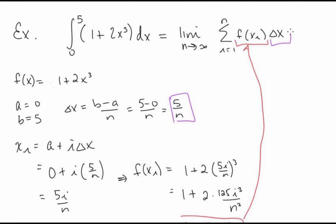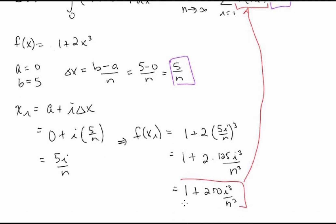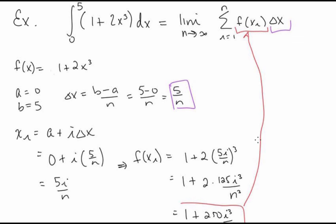That helps us compute x i, since x i equals a plus i delta x. With a equals 0 and delta x equals 5 over n, x i equals 5i over n. Now we need f of x i: plugging 5i over n into the function gives 1 plus 2 times (5i over n) to the third, which is 1 plus 2 times 125i cubed over n cubed, or 1 plus 250i cubed over n cubed.